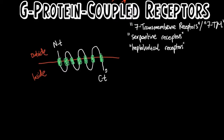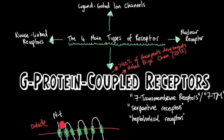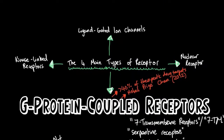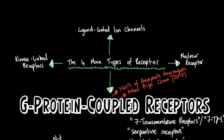The whole question of signal transduction is pretty much what actually happens when the ligand binds the receptor. If we look at the other main types of receptor for a moment, when a ligand binds a ligand-gated ion channel, the ion channel undergoes a conformational change and it opens.